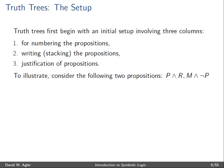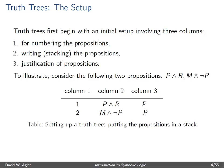So let's take a quick illustration. Suppose we had the following two formulas or propositions, P wedge R and then also M wedge not P. So here are the three columns. The first column is simply numbering propositions that will be found in column two. And column two consists of the formulas that we are putting into the truth tree.